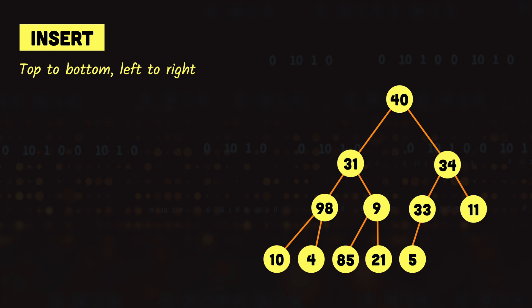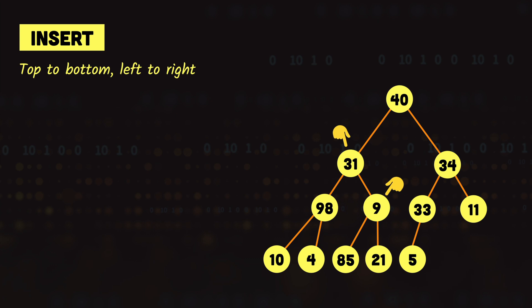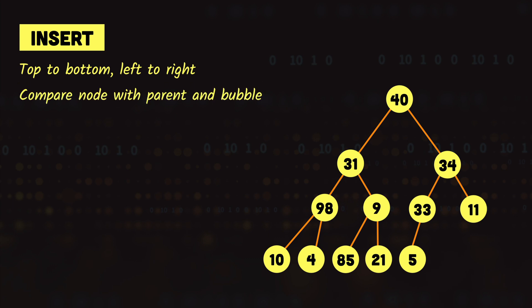Now if we look at our tree we have a problem — it is not a heap. It is a valid complete binary tree, but it is neither a min heap nor a max heap, because some parent nodes have greater or smaller values than their children. To fix this, after each insertion we compare the newly inserted node's value with the parent node and bubble the node up if needed. Let's see how this bubbling works in a min heap.